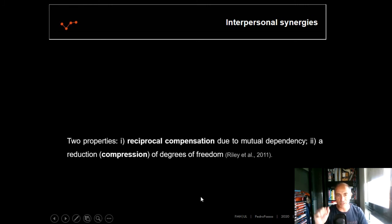Two properties of synergies. One, it must happen a reciprocal compensation between the elements of the system. And second, there is a compression of the degrees of freedom. So when the first property occurs, it means that there is a reduction of the degrees of freedom. Instead of trying to explain the behavior of one element and the other, we explain the behavior of both, the collective behavior or the dyadic behavior of both subjects, both players.